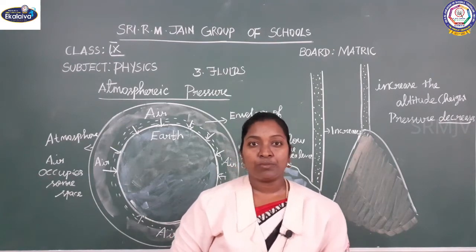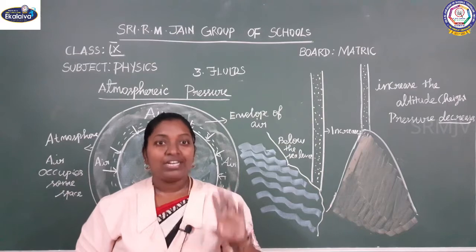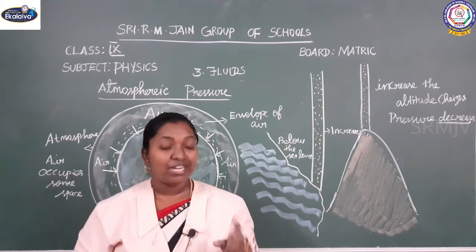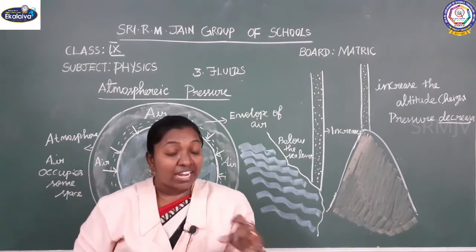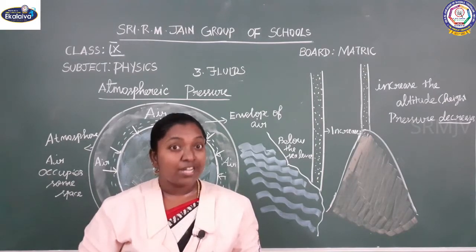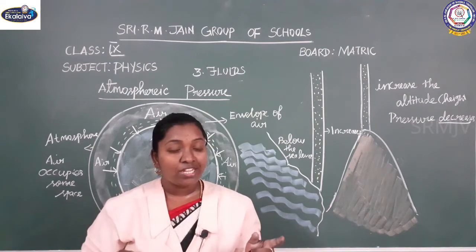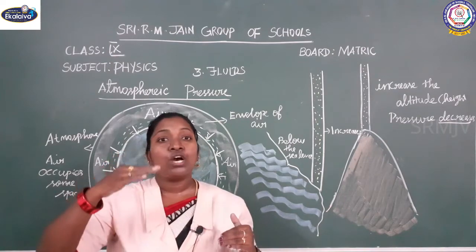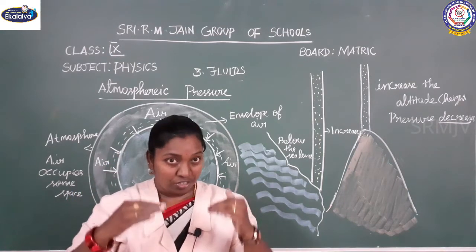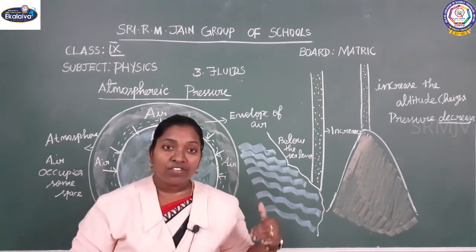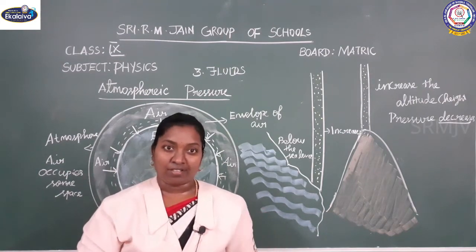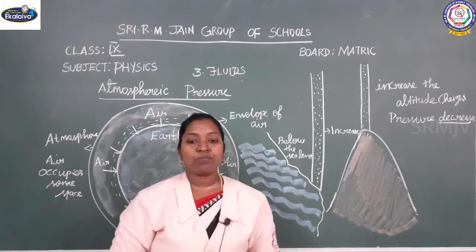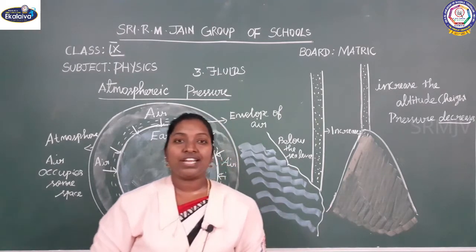So, to summarize: the air surrounding the earth's surface is called the atmosphere. The atmosphere exerts pressure called atmospheric pressure. It varies with change in altitude — when you increase altitude from a mountain, atmospheric pressure decreases; below sea level, atmospheric pressure increases. Please press the subscribe button to receive our online lessons and the latest updates.